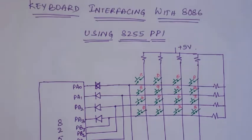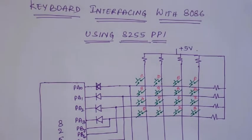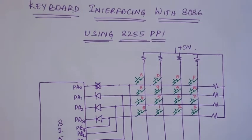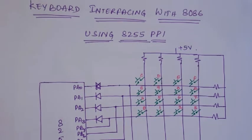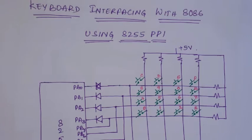Let's continue with interfacing and discuss keyboard interfacing with 8086 using 8255 PPI. There are various types of keyboards available. When you press a key on your computer you are activating a switch. Different types of switches include mechanical key switches, membrane key switches, capacitive key switches, and hall effect key switches.